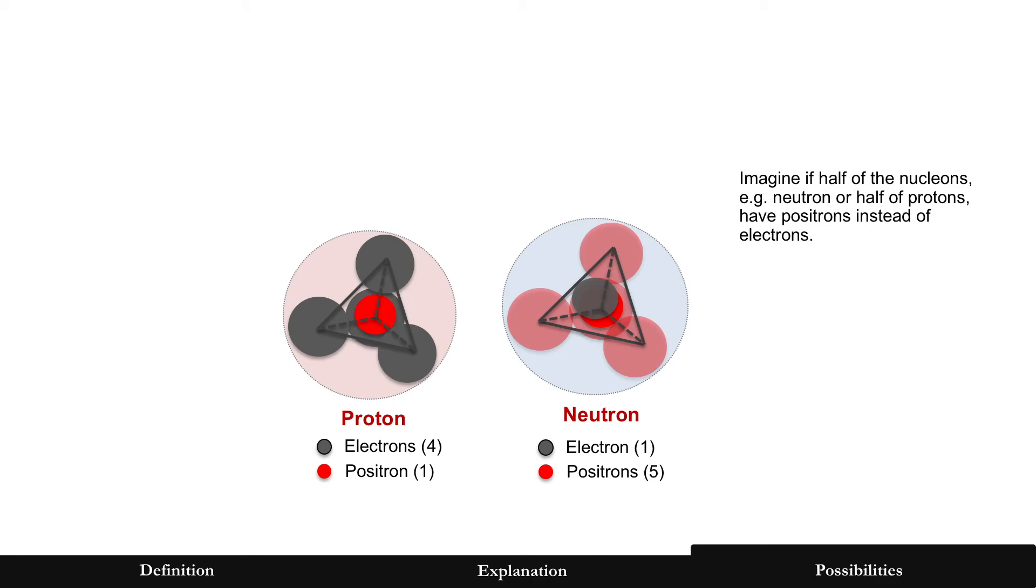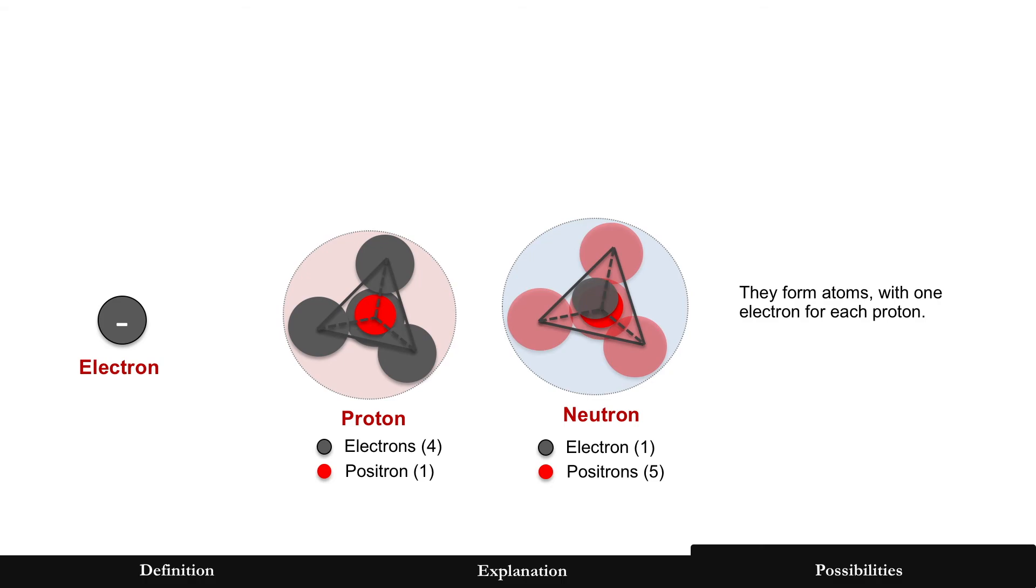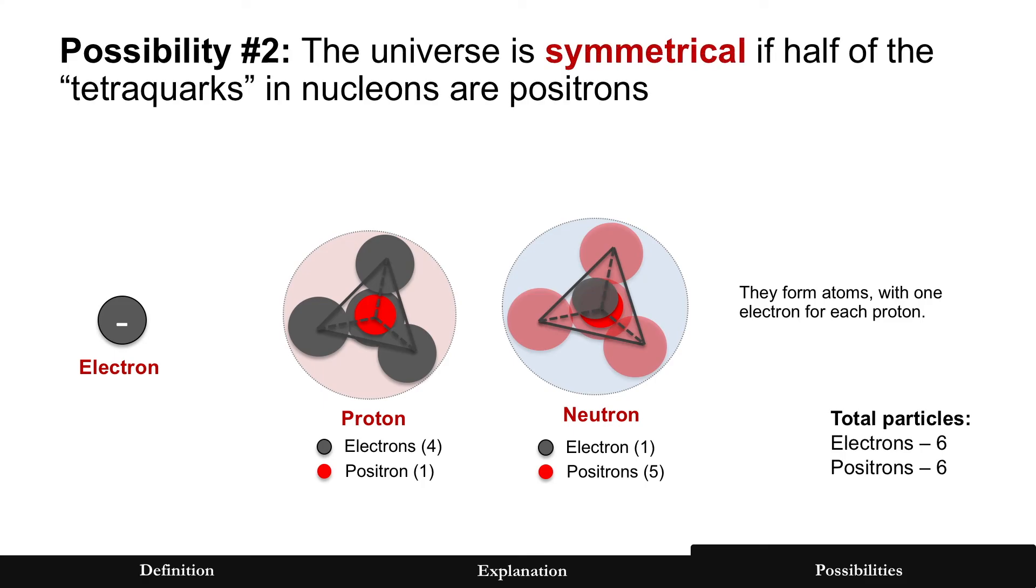Now, the interesting thing about this model now is that you start to build an atom, an equal number of protons and electrons, and let's assume a neutron is also paired with each proton. If you total up this, this is what becomes an atom and matter. If you total that up, these particles are made of six electrons and six positrons total.